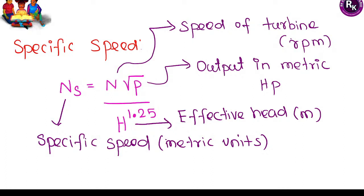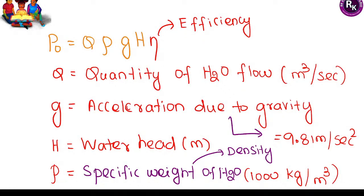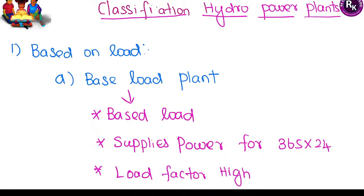For designing a hydropower plant, the specific speed is calculated in metric units. We need to know the speed of the turbine in RPM, the corresponding output power in metric horsepower units, and the height of the power plant. For output power, the formula involves Q, rho, g, h, and efficiency. Please pause the video and note all the formulas properly.